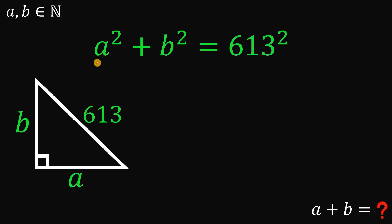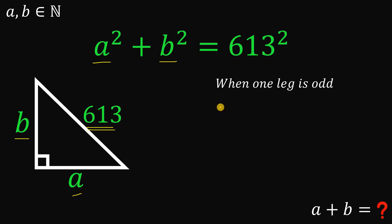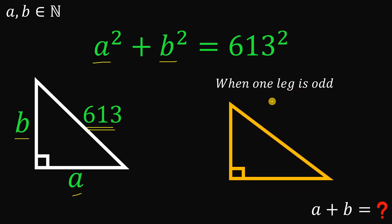Because a and b are both natural numbers, they can be the side lengths of this right triangle. Also, since the hypotenuse is an odd number, it reminds me of a Pythagorean identity when one leg is an odd number — and when one leg is odd, the hypotenuse is also odd. So if one leg n is odd, we can use this pattern.